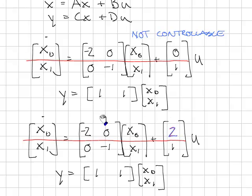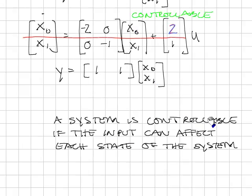If we had a system that was similar, but now the value here is no longer 0, but some value—I've put 2 in here—now the system is completely controllable because by selecting u, we can change the values of x0 and x1. And so we'd say that this system is controllable. A system is controllable if the input can affect each state of the system.